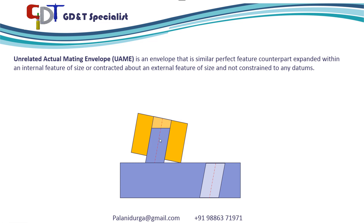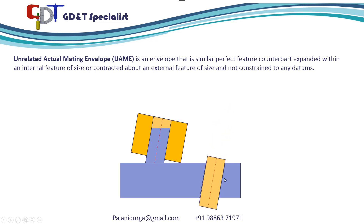Similarly, you have a cylindrical pin. This cylindrical pin will enter into the hole and then touch the high points, and this is not taking the reference of the datum. So this is the unrelated actual mating envelope of an internal feature.